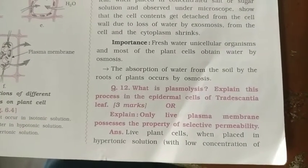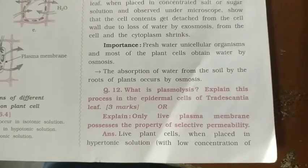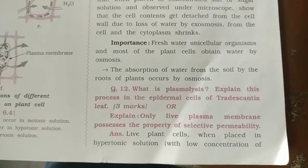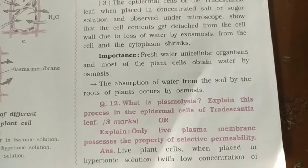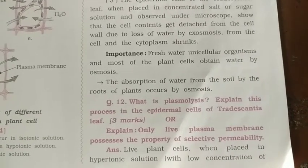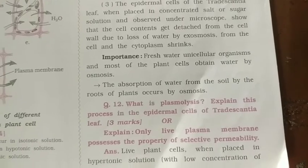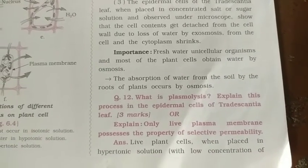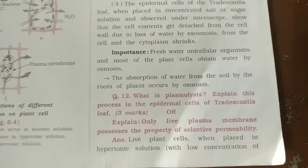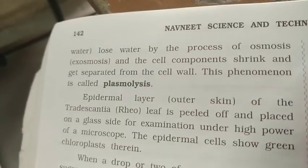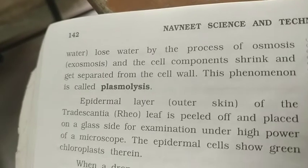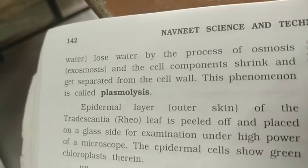Standard 9. Fundamental unit of live plasma cell. Plasmolysis is explained in the epidermal cell of Tradescantia leaf. Only the leaf plasma membrane possesses the property of selective permeability. Live plant cells when placed in a hypertonic solution lose water by the process of osmosis, and the cell components shrink and get separated from the cell walls.